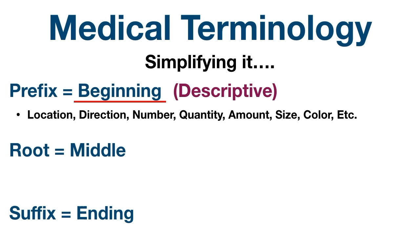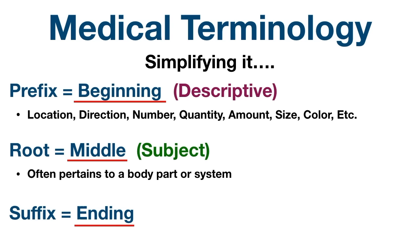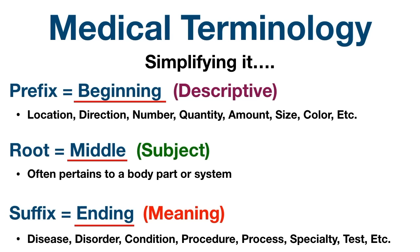Next is the root. The root forms the middle of the word, and if there is no prefix then it forms the first part of the word. The root gives the medical term its core meaning — it's the subject of the word and often pertains to a body part or system. Finally, we have the suffix, which forms the end of the word. The suffix brings meaning to the medical term and might indicate a disease, disorder, condition, procedure, process, specialty, or test.